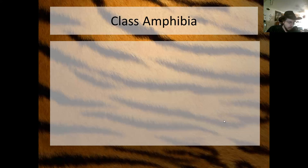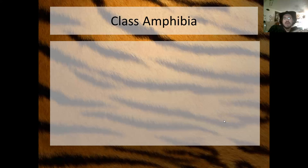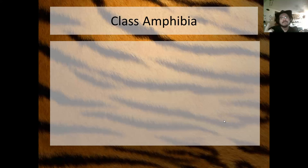That's enough of the fish. We've gotten through class Agnatha, class Chondrichthyes, and class Osteichthyes — as well as the tunicates and the lancelets. Now it's time for class Amphibia.